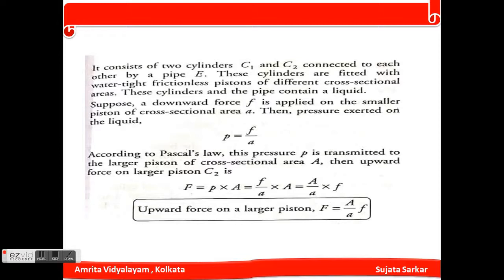Let us consider two cylinders C1 and C2 connected to each other with a pipe. The cylinders are fitted with water-tight, frictionless pistons of different cross-sectional areas. The cylinders and the pipe contain a liquid. A downward force F is applied on the smaller piston of cross-sectional area a, so the pressure p equals F divided by a.